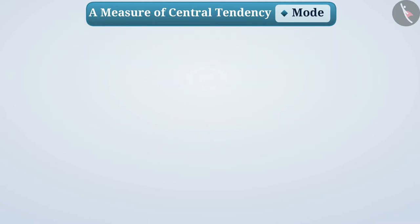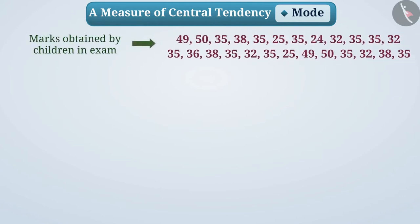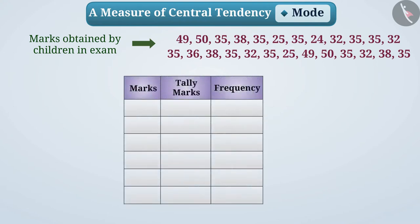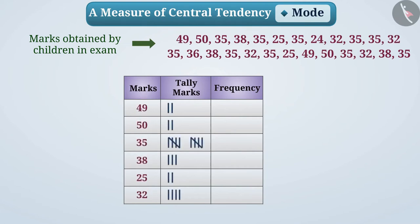Now look here. The marks obtained by children in a competitive examination are given. There are a large number of observations, so it will not be easy to find the mode just by looking at the numbers. For convenience, we can arrange the data in a frequency distribution table, writing each number and showing it by tally marks and the number of times it has appeared. The count of tally marks tells us the frequency of that number. Can we identify a mode based on frequency?